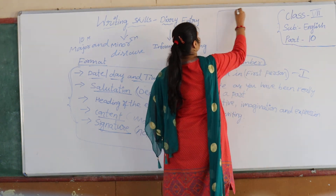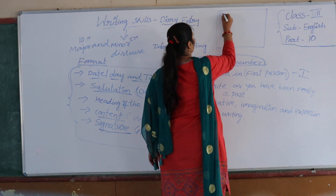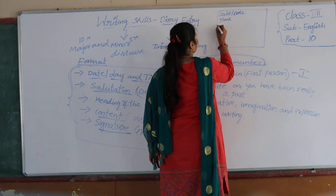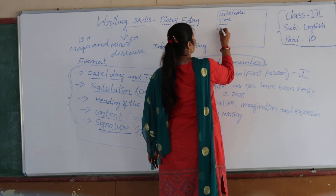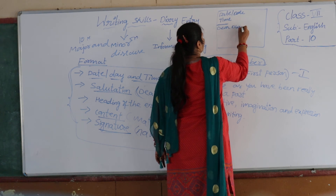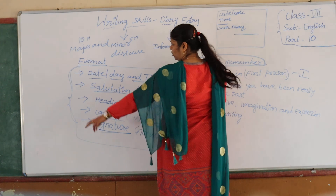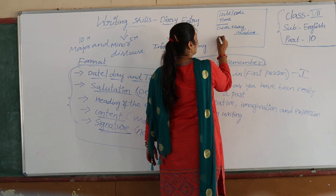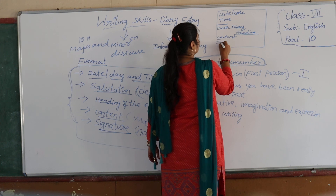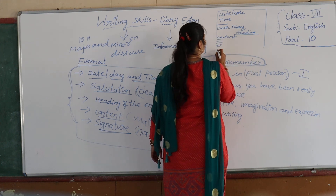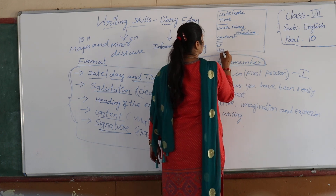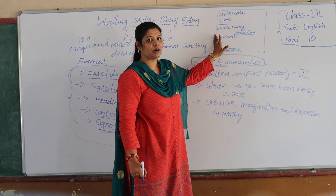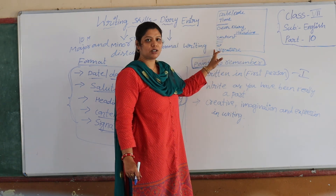On your paper, you start with the date on the left, then the time. Give a little gap or space, then start your salutation — written in capital letters with a comma. After that, your heading. Then, from the next line, you start your content. After your content is finished, give a space, then write your signature at the end. That is the representation of this format on paper. I hope you understand clearly how to represent a diary entry on paper.